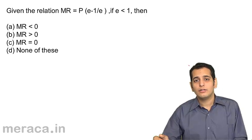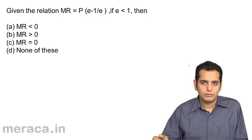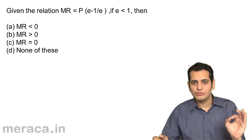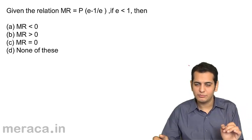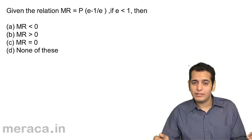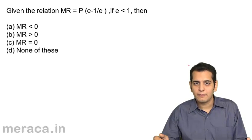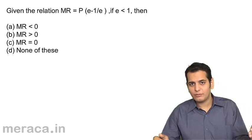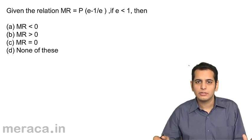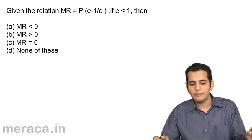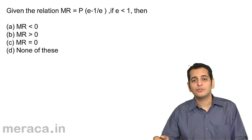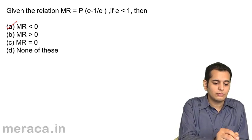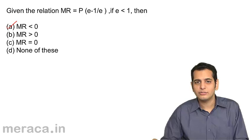We have learned the principles. We have learned the three cases. That is, when E equals 0, MR becomes 0; E is greater than 1, MR is positive; and E is less than 1, MR becomes negative. So in this case, we are given E is less than 1, so MR should be negative. To be negative, it has to be less than 0. The answer is MR is less than 0.